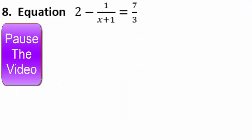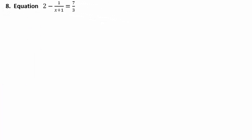Alright, see what you can do with 2 minus 1 over x plus 1 equals 7 thirds. Remember your toolbox — how to undo division, multiplication, addition, subtraction. Here the denominator is x plus 1, which means x cannot equal negative 1 because otherwise you'd have zero in the denominator. So we cannot have x equals negative 1.